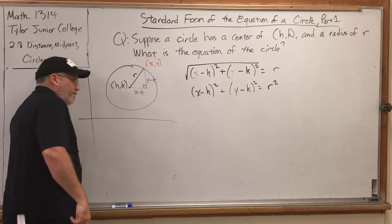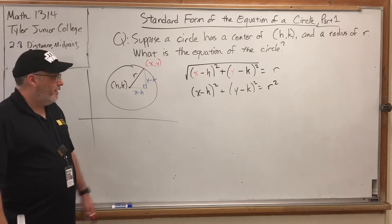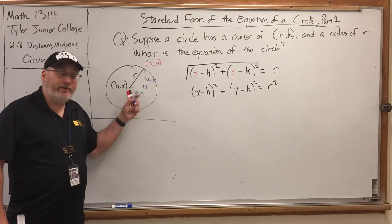So the run is x minus h, and the rise is y minus k. This is just the Pythagorean theorem done in this picture.